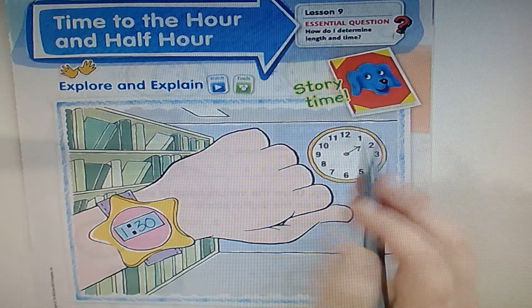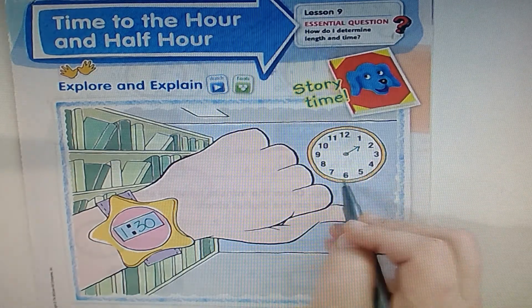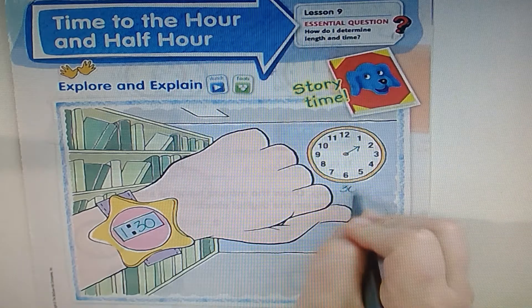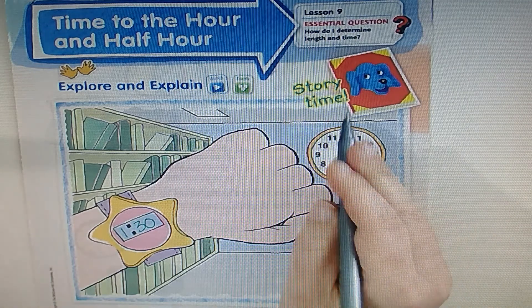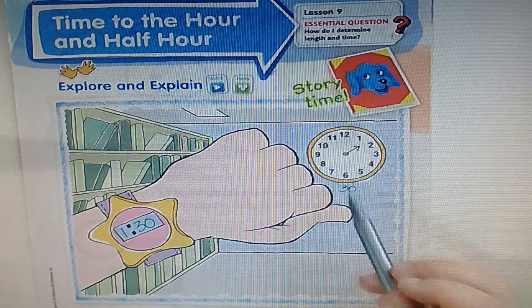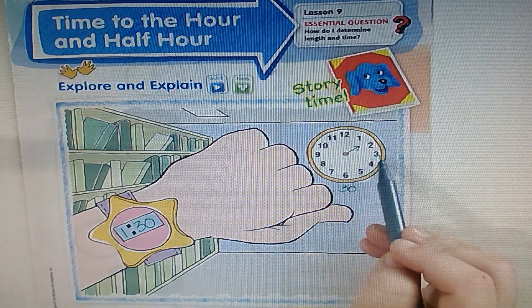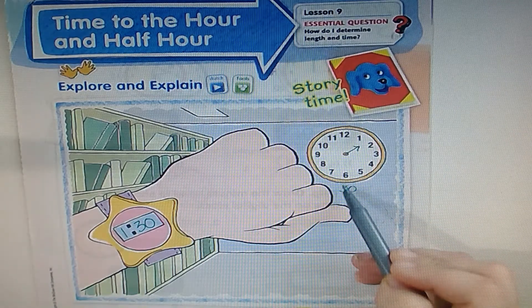So knowing that, you can either memorize that the 6 is where the 30 is because it's a half hour. 30 is half of 60, 60 minutes in an hour. Or you can count 5, 10, 15, 20, 25, 30.